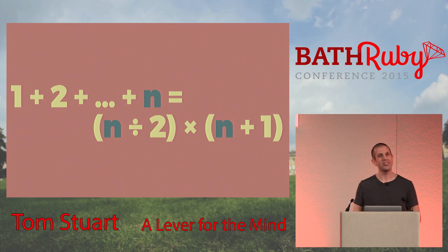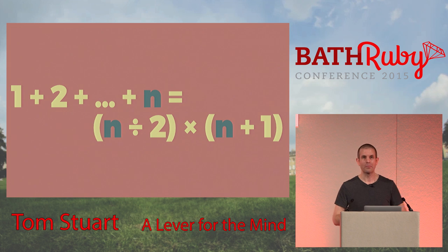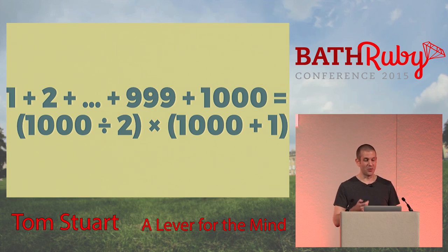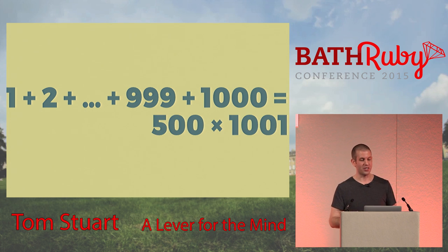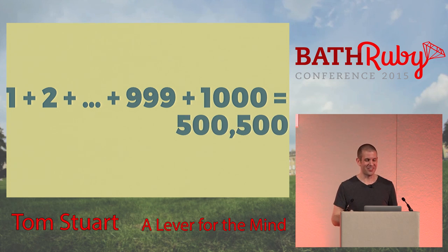Now, can you remember all the details of that argument? If not, it doesn't matter, because you don't need to remember the details — you just need to know this formula. It's a pattern, an abstract tool you can use even if you don't know why it works. What's 1 plus 2 plus 3 all the way up to 1,000? We now know it's half of 1,000 times 1,001, which is 500 times 1,001, which is 500,500.